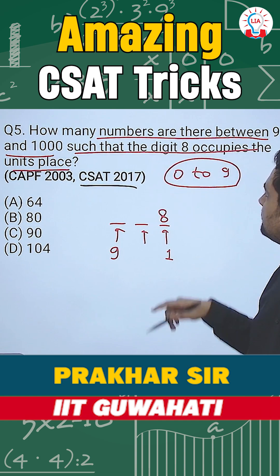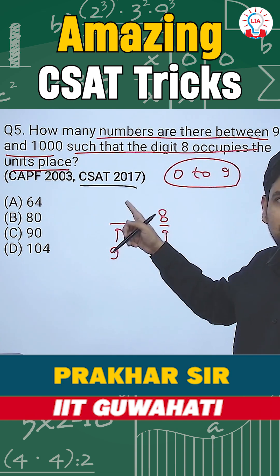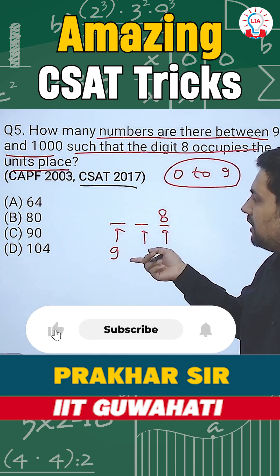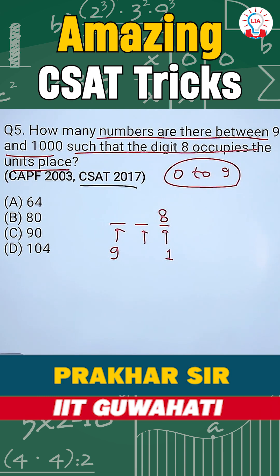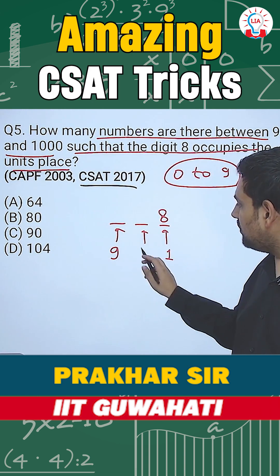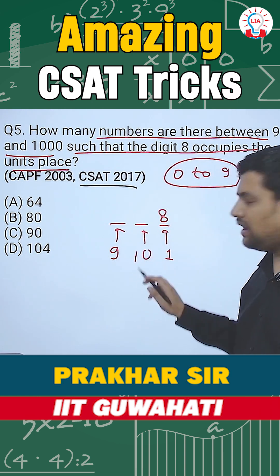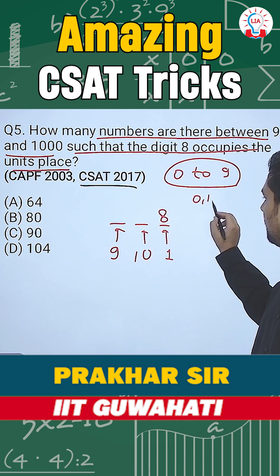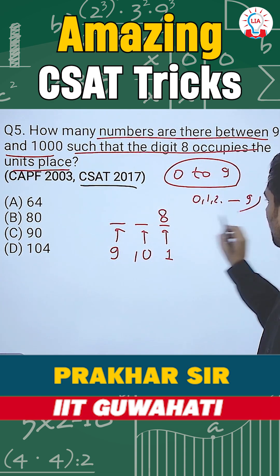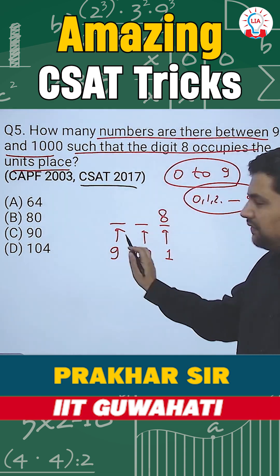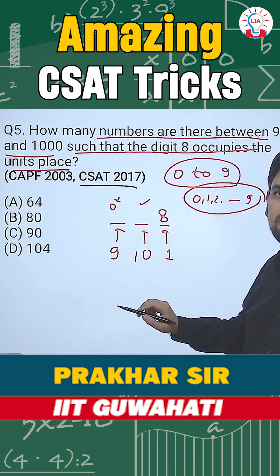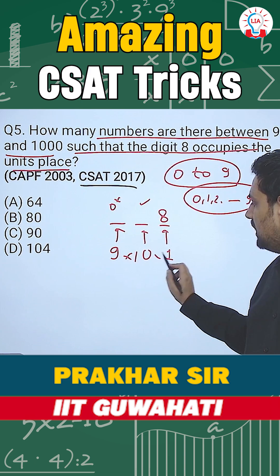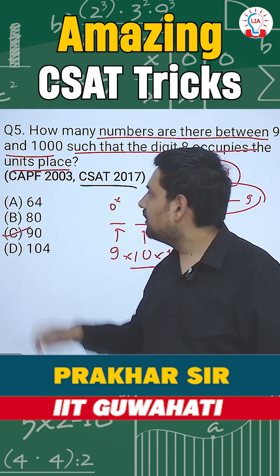After that, you can still repeat the numbers — it does not matter if you are repeating or not. For the tens place, how many possibilities do you have? You have 10 possibilities, starting from 0, 1, 2 till 9. All of these are possibilities. In the first slot, 0 was not a possibility, that is why we removed one, but here we have all the possibilities. So this becomes 9 into 10 into 1, that is 90. That is it.